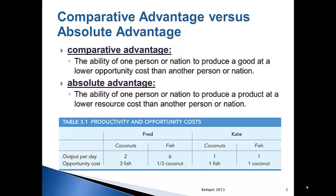When fishing, Fred has an opportunity cost of one-third of a coconut, and Kate has an opportunity cost of one coconut. One-third is less than one, therefore Fred has a comparative advantage in fishing. We can see that Fred, if he were to specialize in fishing, could trade fish every day, meet his needs, and trade the excess for coconuts from Kate.